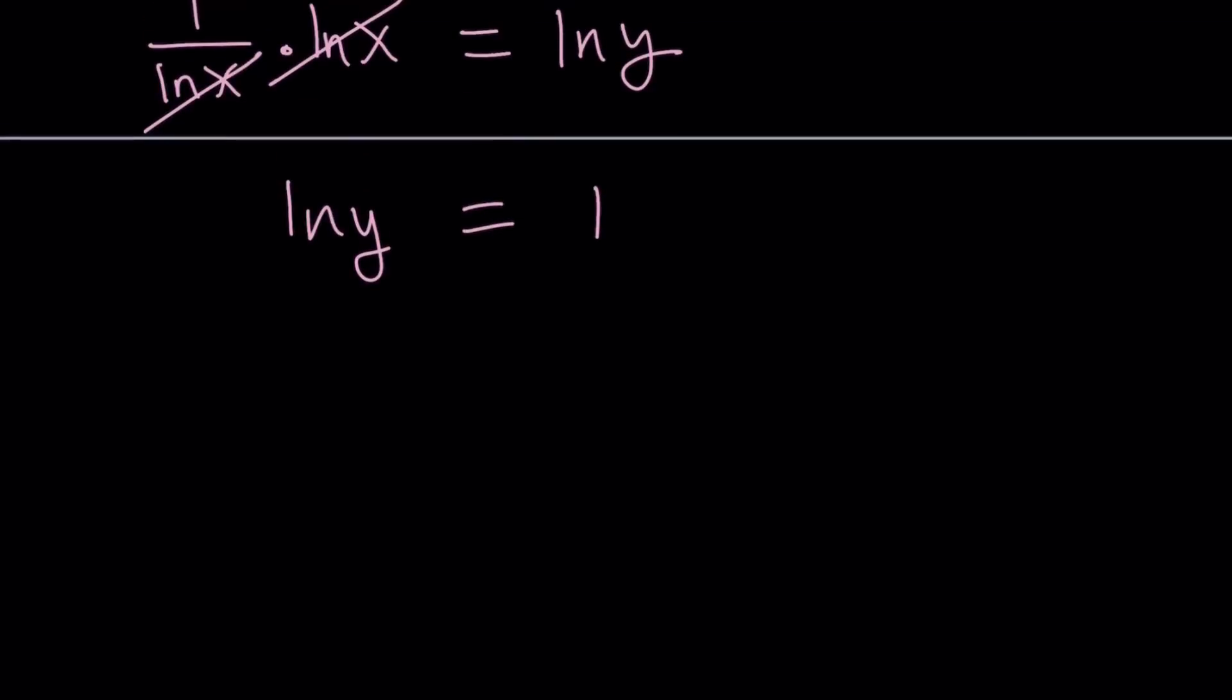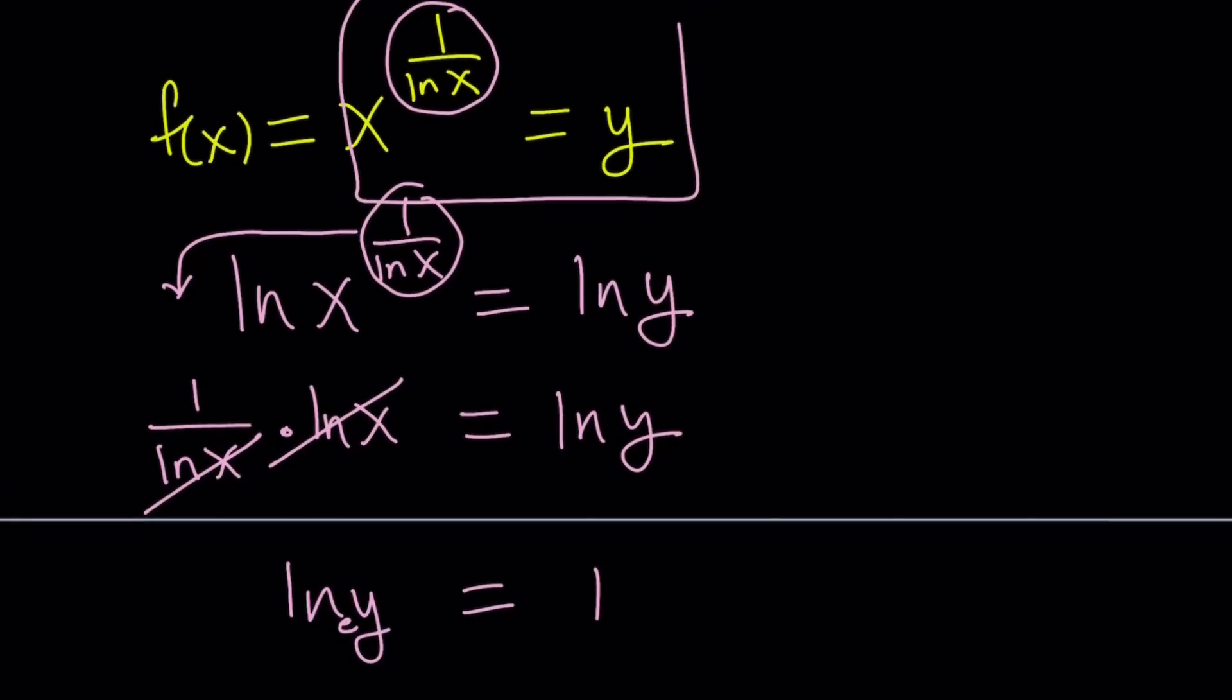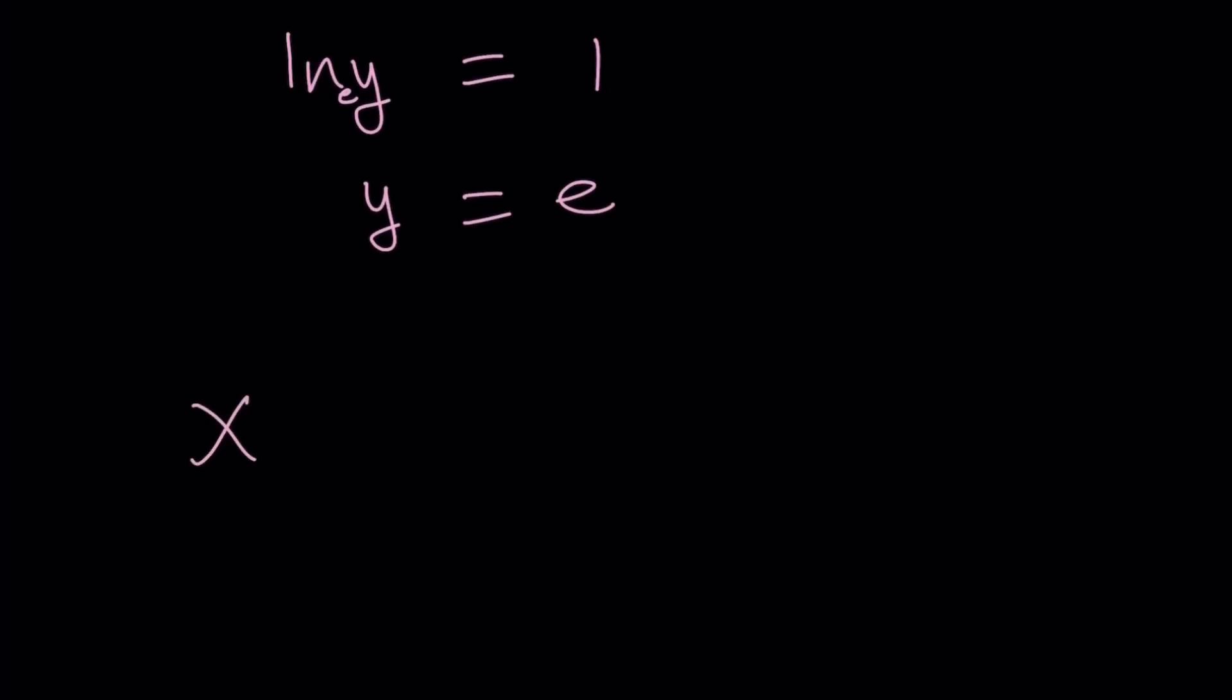ln x cancels out, leaving us with ln y equals 1. No x's in the equation. And from here, we can safely say since this is natural log with base e, then this becomes y equals e. But what is y? y is x to the power 1 over ln x. And that just happens to equal e. Is this true for all values of x? Let's talk about that. But we have a finding. Our variable expression or seemingly variable expression turned into a constant. And you've seen why.